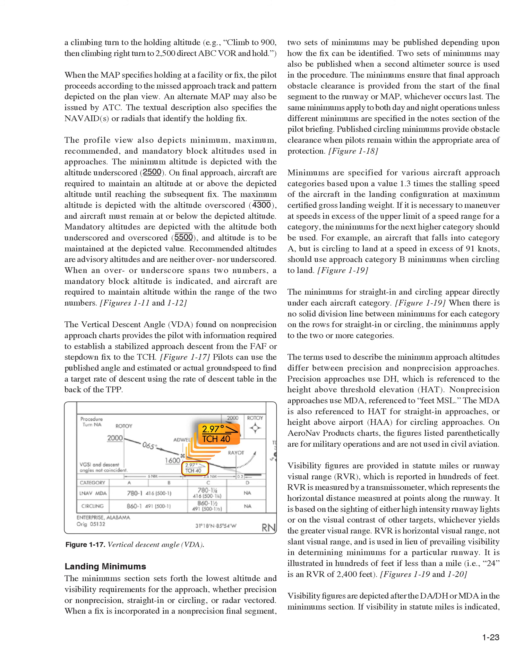The minimum altitude is depicted with the altitude underscored; on final approach, aircraft are required to maintain an altitude at or above the depicted altitude until reaching the subsequent fix. The maximum altitude is depicted with the altitude overscored, and aircraft must remain at or below the depicted altitude. Mandatory altitudes are depicted with the altitude both underscored and overscored, and altitude is to be maintained at the depicted value. Recommended altitudes are advisory altitudes and are neither over nor underscored. When an over or underscore spans two numbers, a mandatory block altitude is indicated, and aircraft are required to maintain altitude within the range of the two numbers. The vertical descent angle, VDA, found on non-precision approach charts provides the pilot with information required to establish a stabilized approach descent from the FAF or step-down fix to the TCH. Pilots can use the published angle and estimated or actual ground speed to find a target rate of descent using the rate of descent table in the back of the TPP.